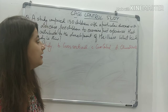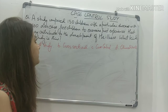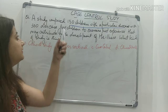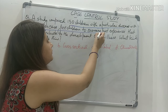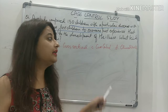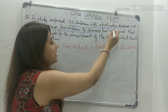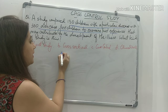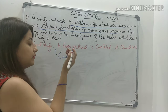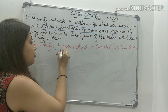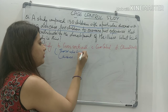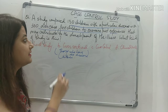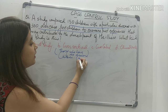You need to look at the question carefully. The study compares 150 children with a particular disease with 300 disease-free children to examine past experiences. From this you know that in your study you have two groups. One group - the cases - are those who have the disease, and there are 150 of them.